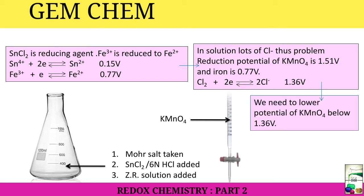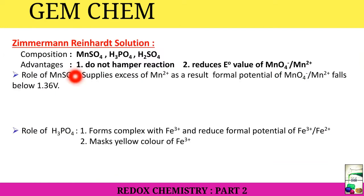So we need to remove this Cl⁻. We either require to remove this or we can reduce this potential less than 1.36 volt so that it can't oxidize this Cl⁻. What we use is we need to lower the potential of KMnO4 below 1.36 volt. So we add ZR solution, that is Zimmermann Reinhardt solution.